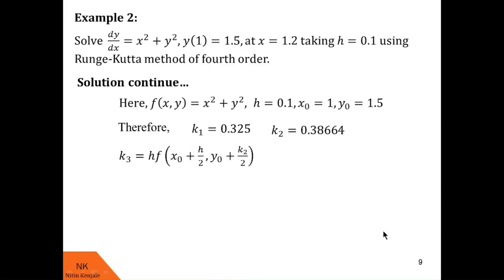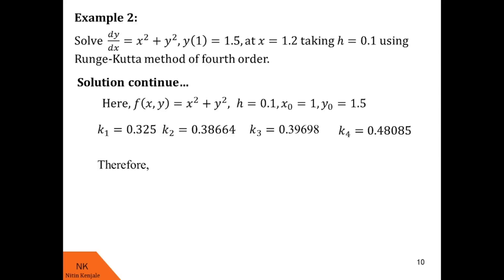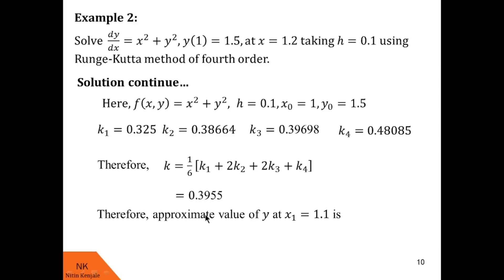Next, k₃ = 0.39698 and k₄ = 0.48085. Substituting k₁, k₂, k₃, k₄ into the formula k = (1/6)(k₁ + 2k₂ + 2k₃ + k₄), we get k = 0.3955. Putting this into y₁ = y₀ + k, where y₀ = 1.5, we get y₁ = 1.8955. This is the solution at x₁ = 1.1.